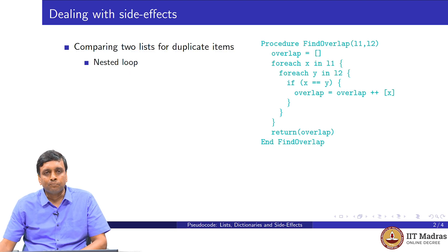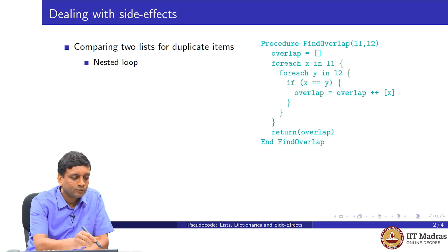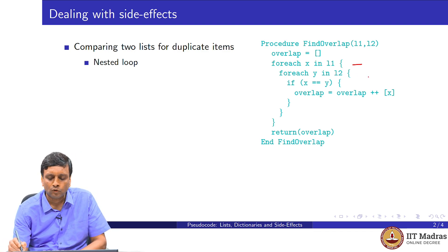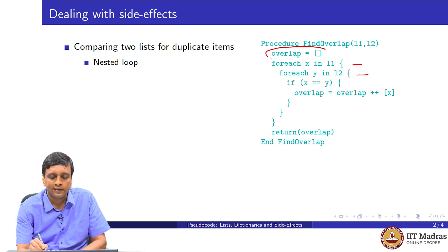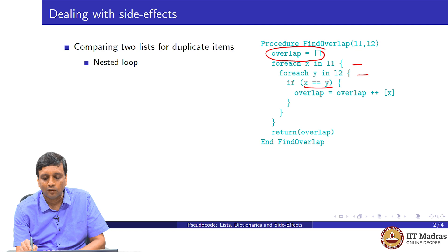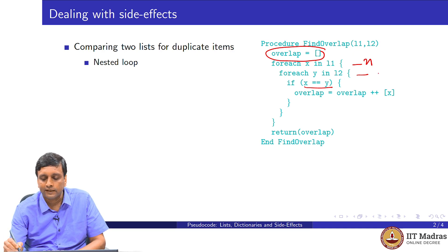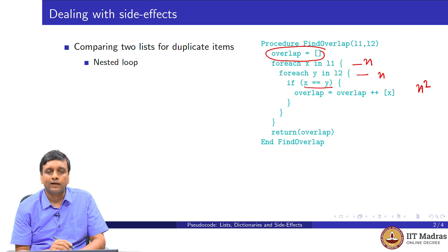Let us look at a simple problem involving lists. Suppose we have two lists and we want to check whether there are items duplicated across these lists. A simple pseudocode starts with the outer list, iterates through all elements in both lists, and accumulates a new list called overlap — containing items found in both L1 and L2. Every time we find an x in L1 and a y in L2 which are equal, we append it to overlap. This is a nested loop, and if L1 and L2 each have n elements, the loop runs n squared times.